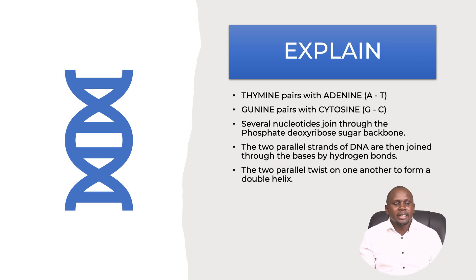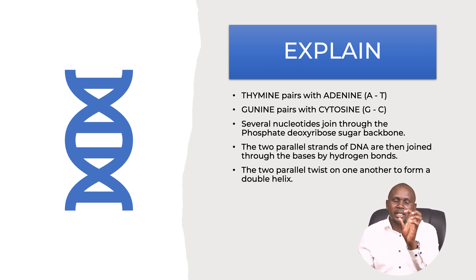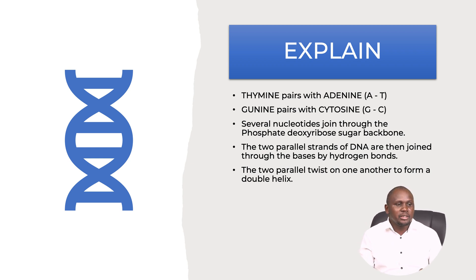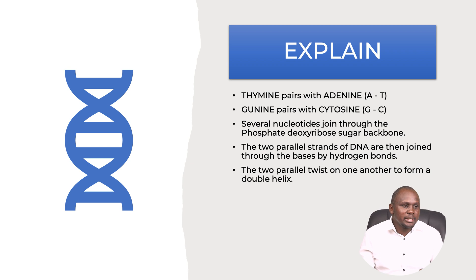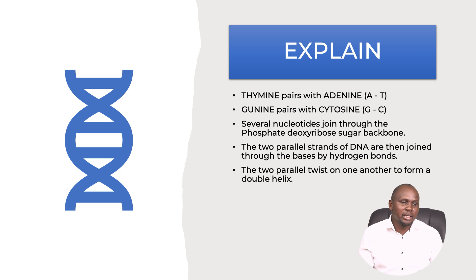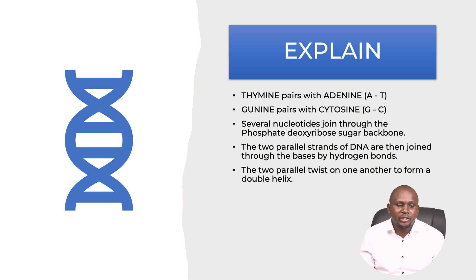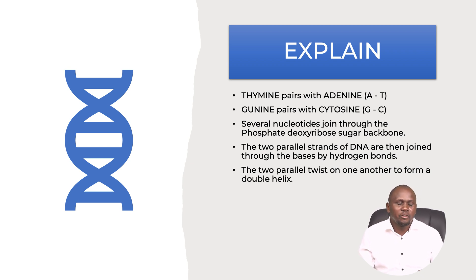Adenine pairs with thymine, and guanine pairs with cytosine. Several nucleotides joined through the phosphate give a sugar-phosphate backbone. The two parallel strands of DNA are joined through their bases by hydrogen bonds. The two parallel strands then twist on one another to form what we call a double helix.